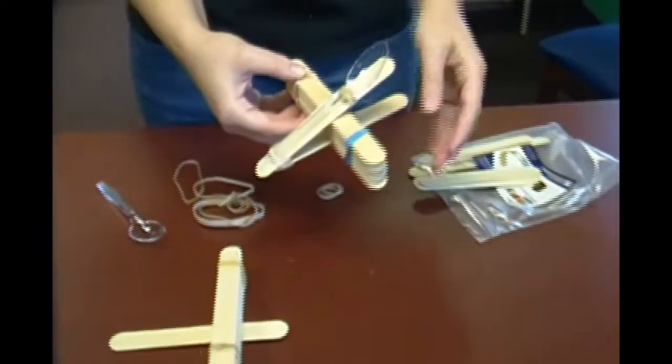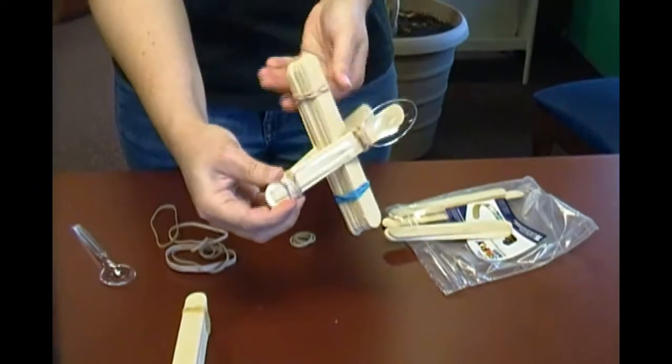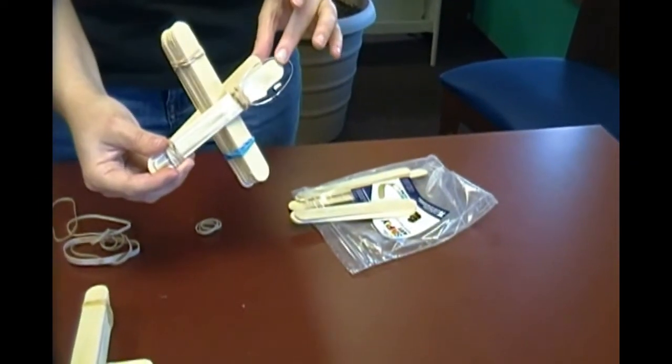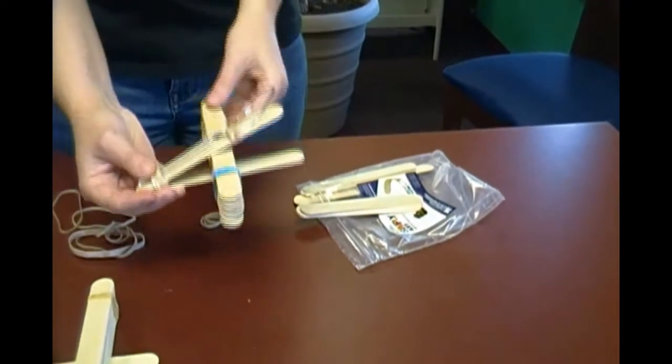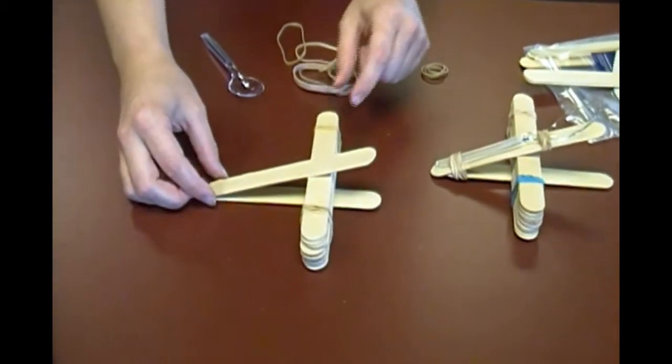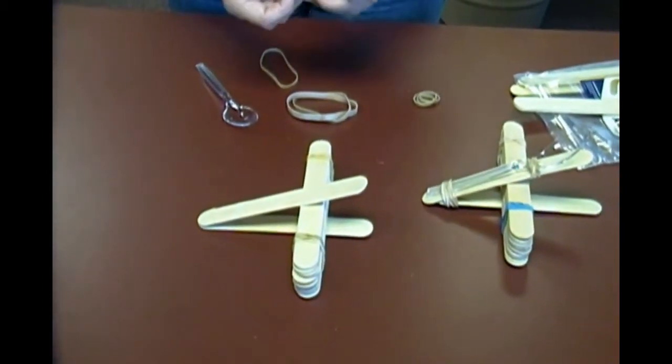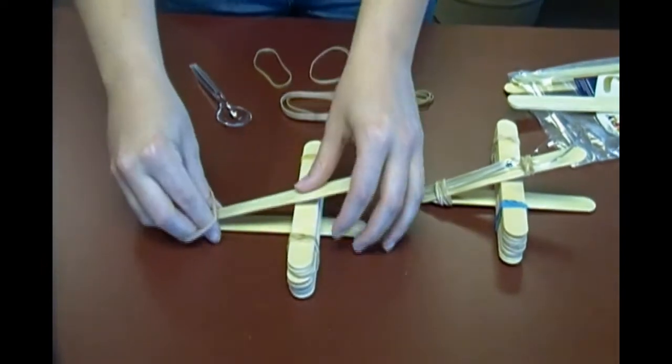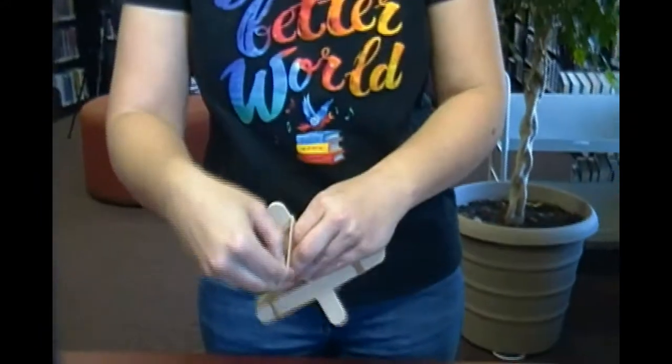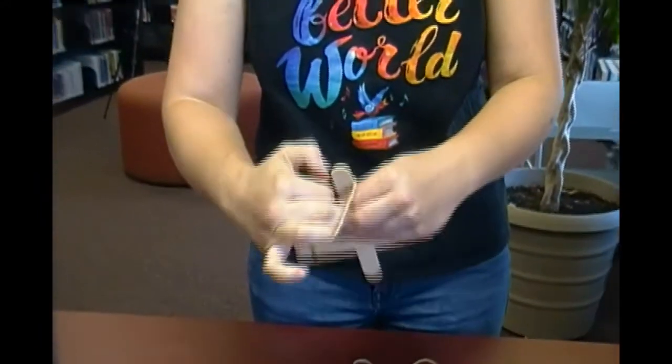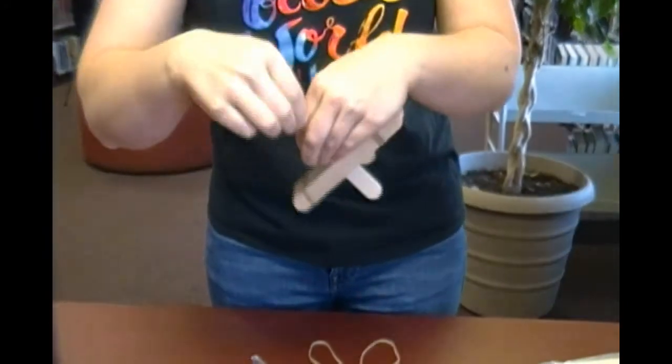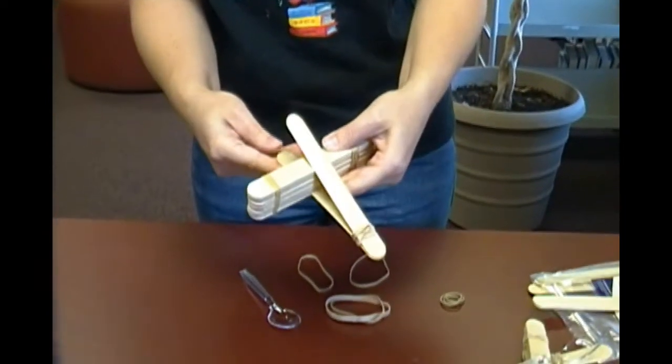And then the next thing we have, we have this popsicle stick that connects to it and they're rubber banded together. And so I'm going to go ahead and get one more popsicle stick and we're just going to kind of stick it on here just like that. We're going to try and get this one as tight as we can because this is the one that gives you your bounce.